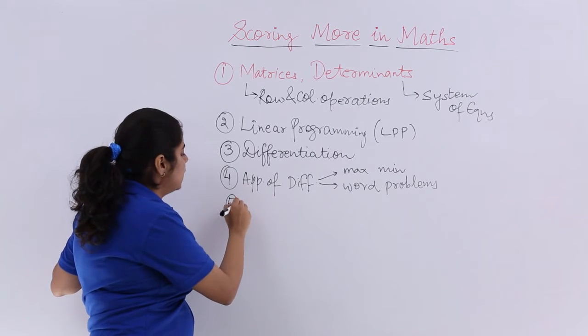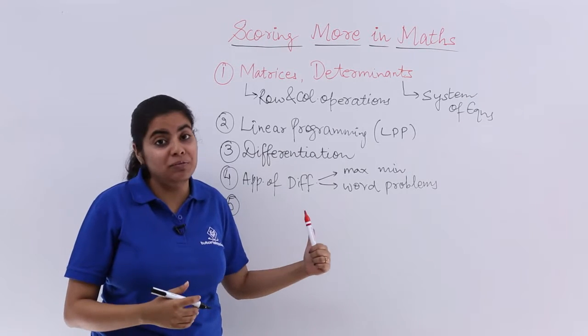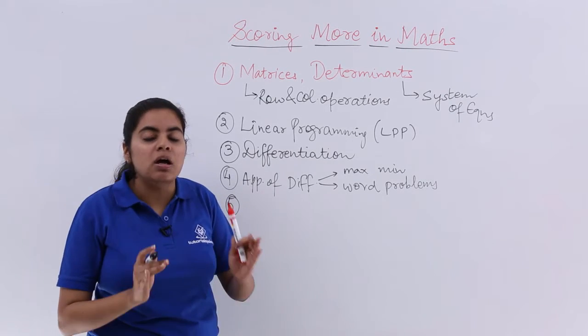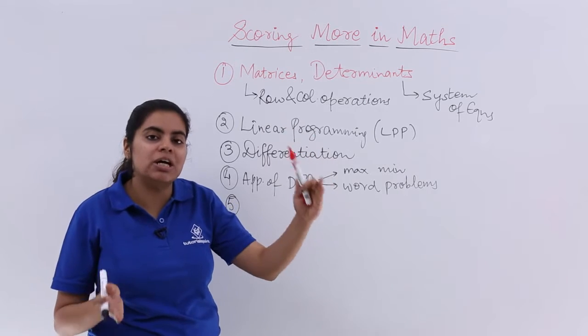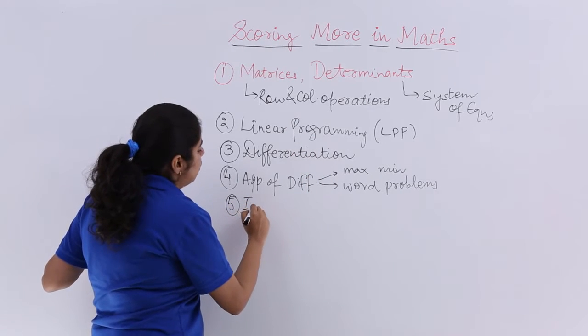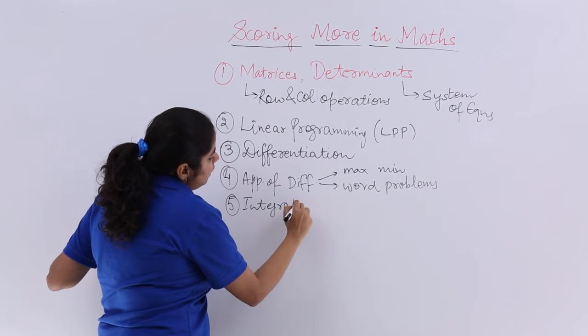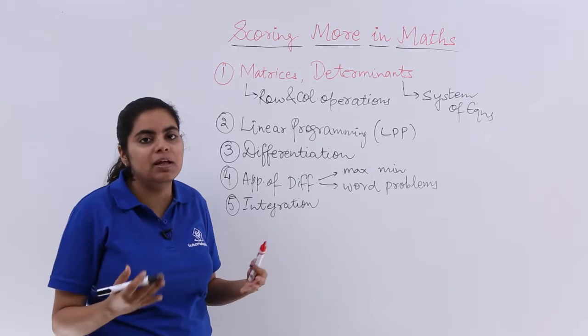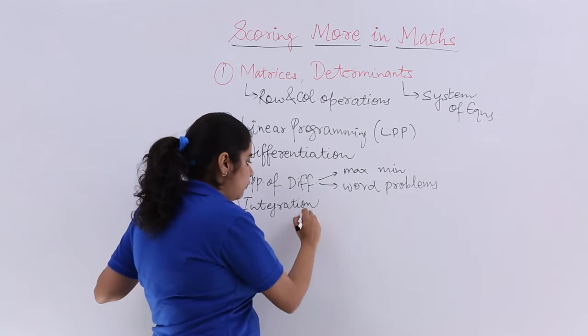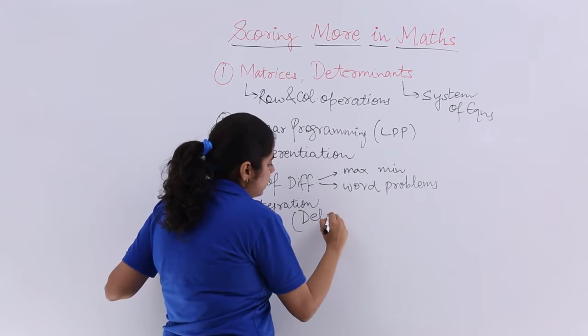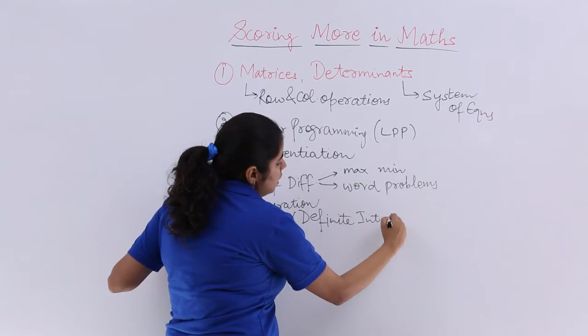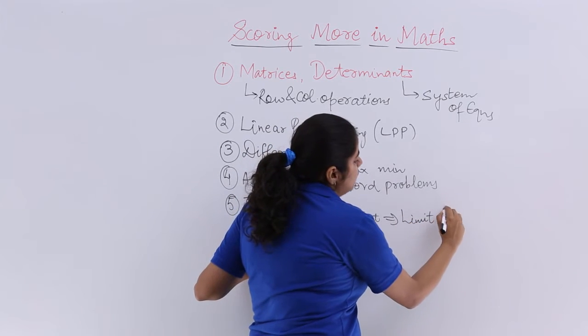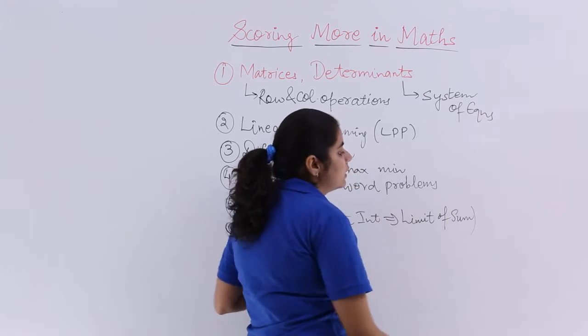Next, after application of derivatives, you know that I am going to talk about a very difficult chapter for a few people. But this has to be done in order to score for that section which has all the 6 markers and 4 markers. That is your integration. In integration, indefinite integration, there is nothing important. Every time there are random questions, you have to do it full. But in definite integration, the limit of some topic, this is important according to me, this you have to do.